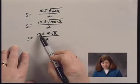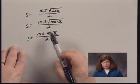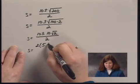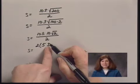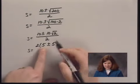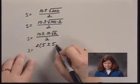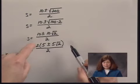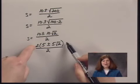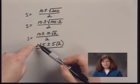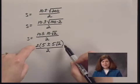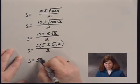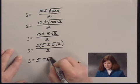Since I can factor a 2 out of both the 10 here and the 10 here, I can simplify again. I write that as 2 times 5, plus or minus 5 times the square root of 2, and all that divided by 2. The numerator is factored, so I can cancel factors of 2 in the numerator and denominator — don't attempt this until you can factor the numerator. The result is S equals 5 plus or minus 5 times the square root of 2.